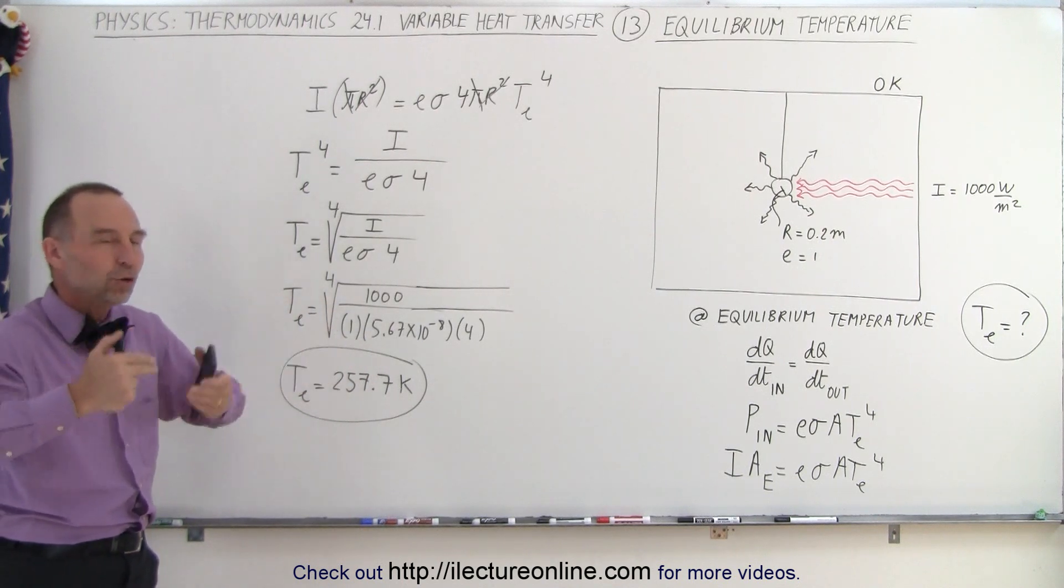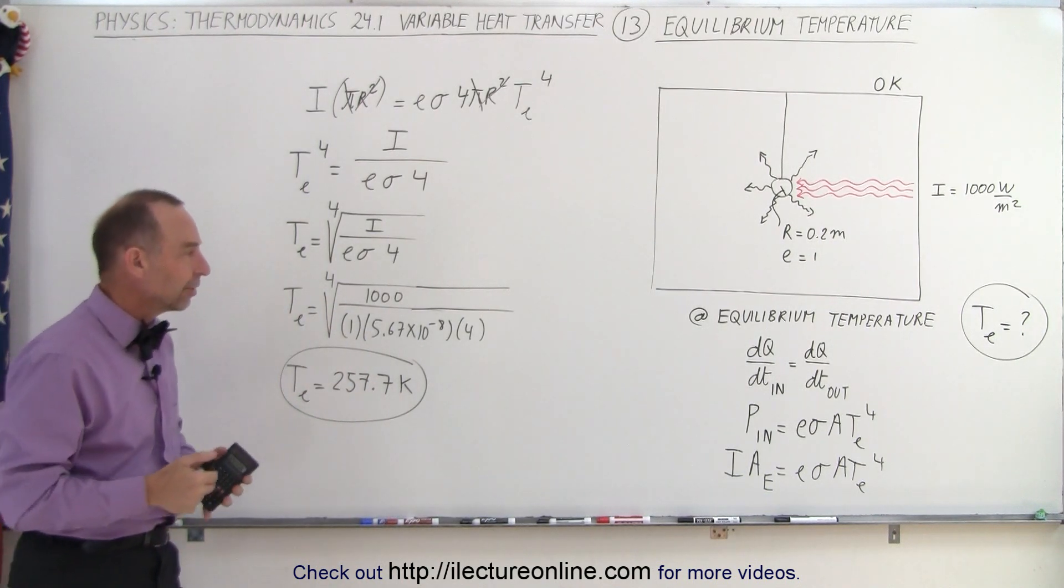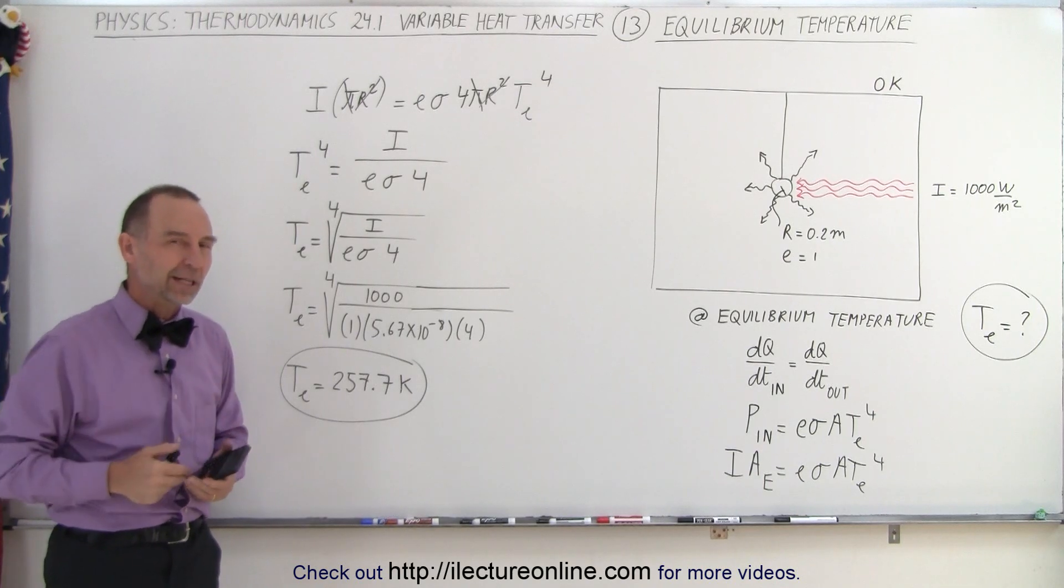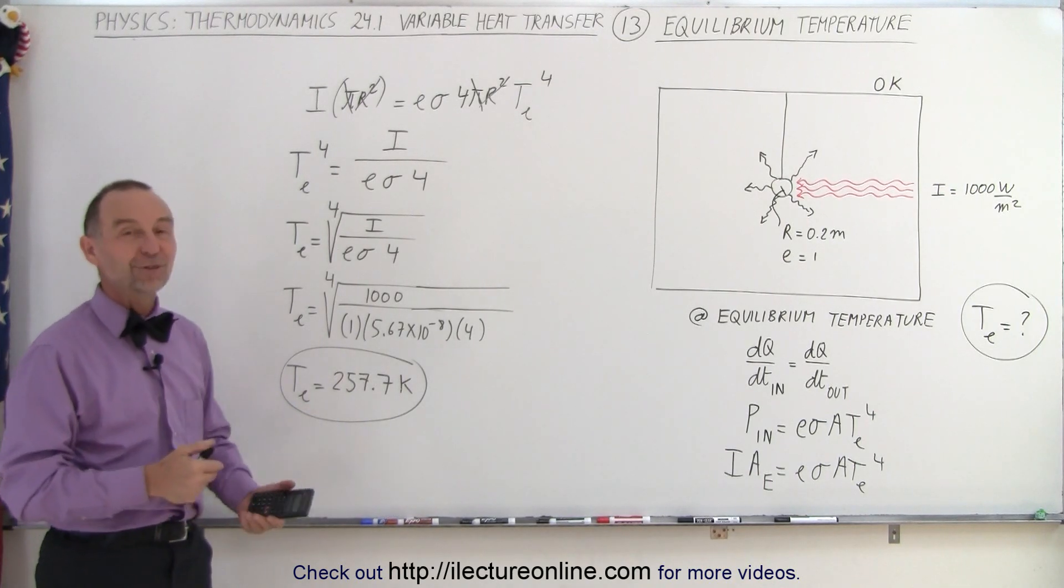At some point, the two rates will be equal and then we'll calculate the equilibrium temperature, just like we did here. And that's how it's done.